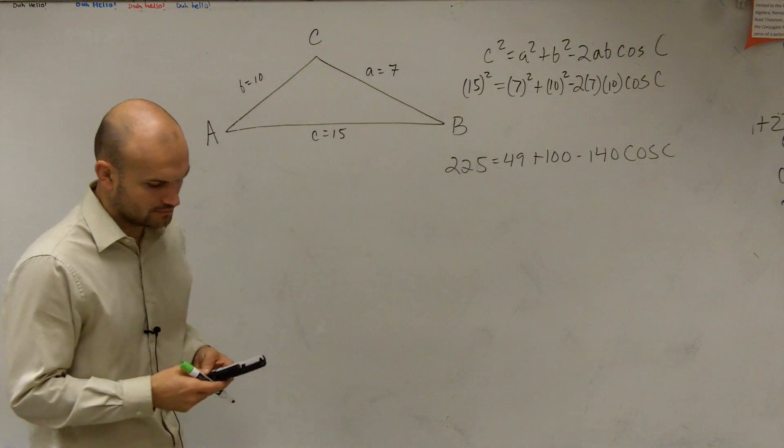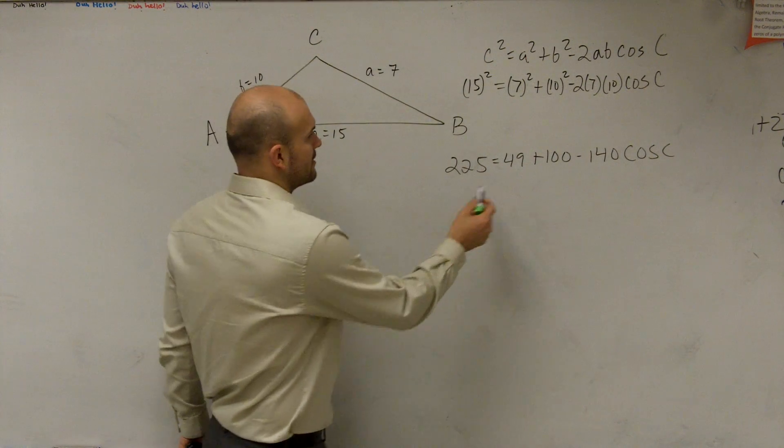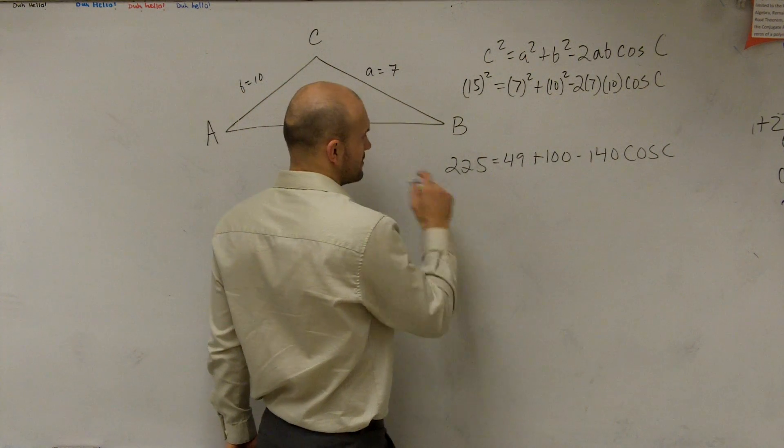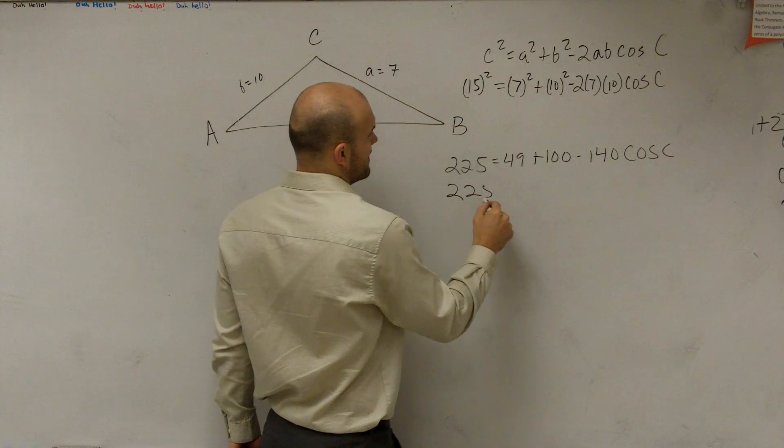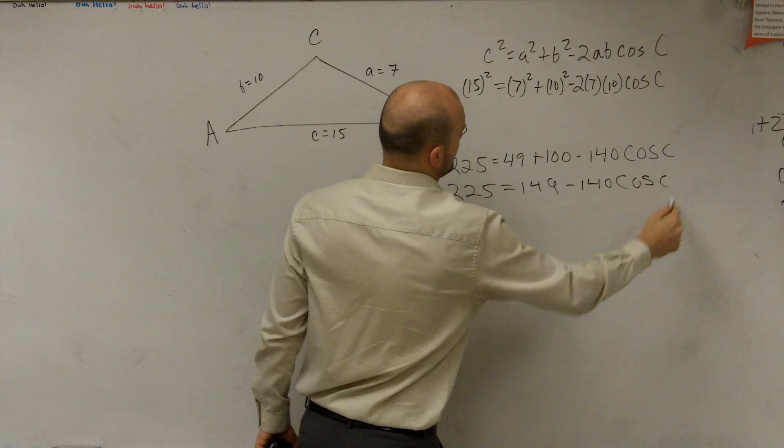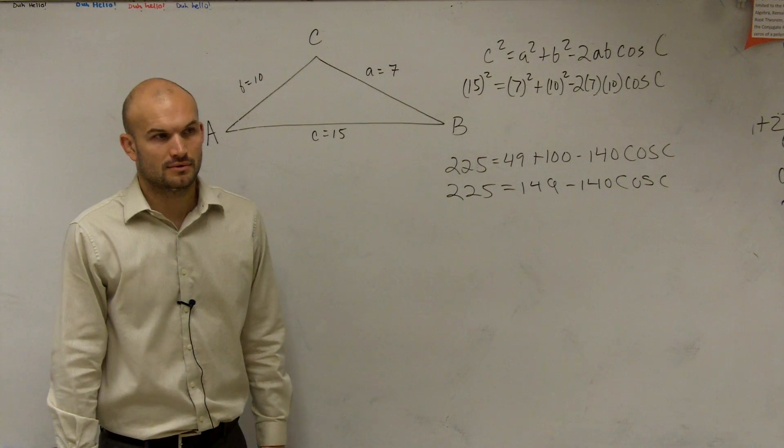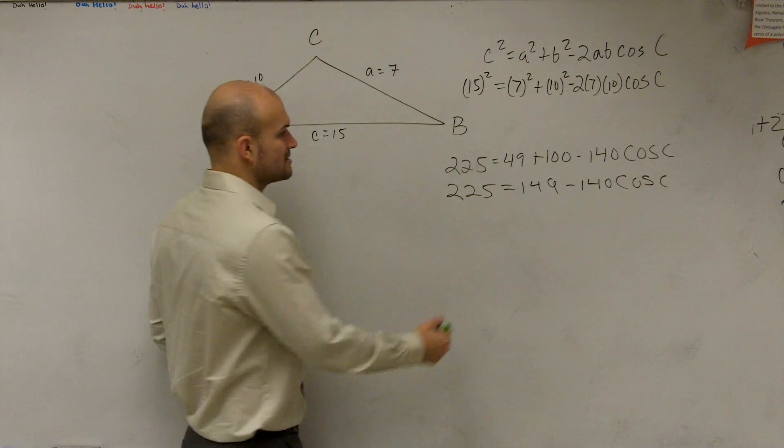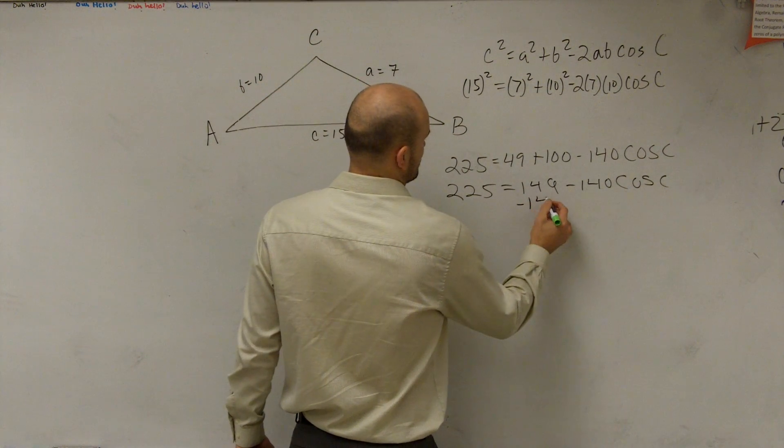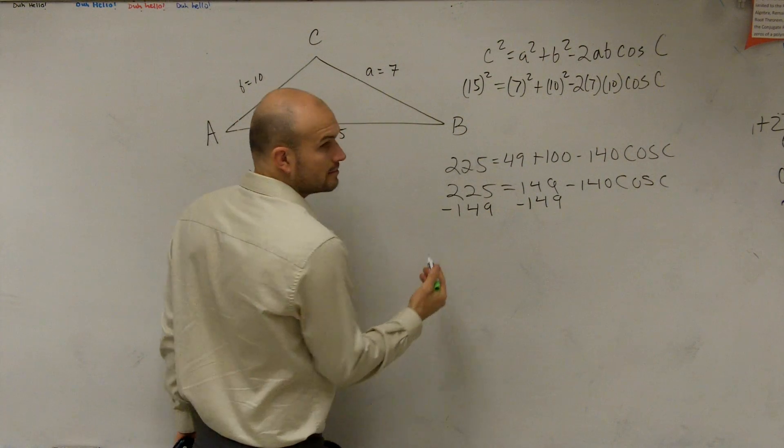Okay. So then what we're just going to look at is we can combine these like terms. So we have 225 equals 149 minus 140 cosine of c. Then we subtract.